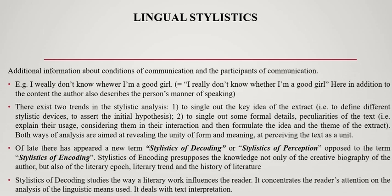There exist two trends in stylistic analysis: first, to single out the key idea of the extract — that is, to define different stylistic devices and assert the initial hypothesis; and second, to single out some formal details and peculiarities of the text, explain their usage considering them in their interaction, and then formulate the idea and theme of the extract. Both ways of analysis are aimed at revealing the unity of form and meaning, at perceiving the text as a unit.